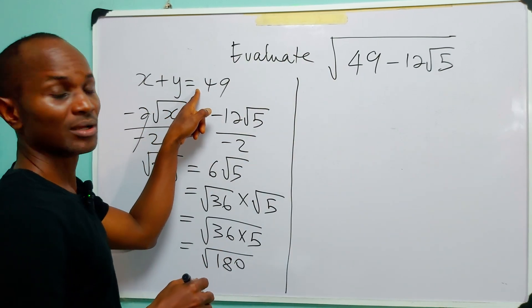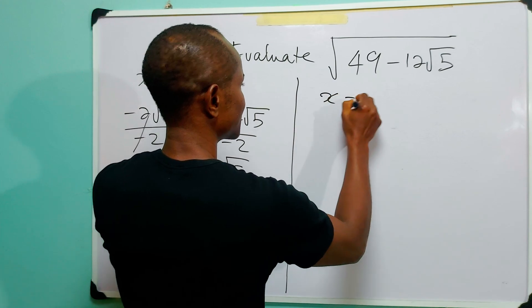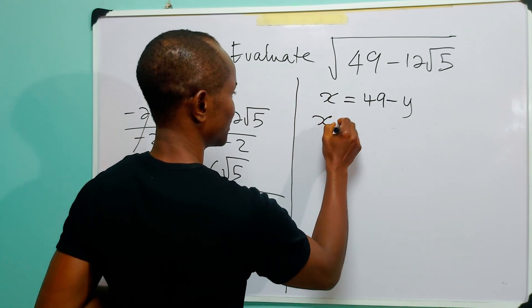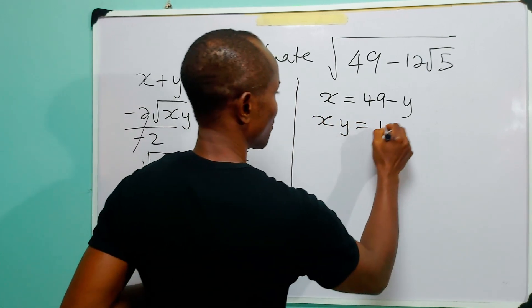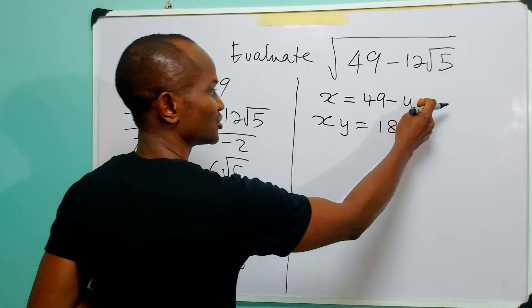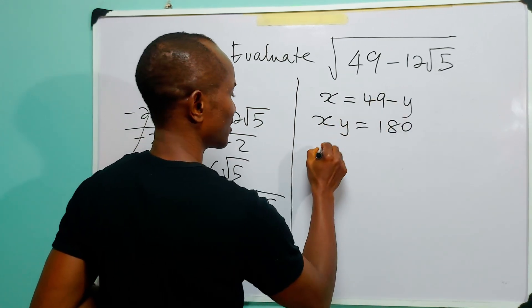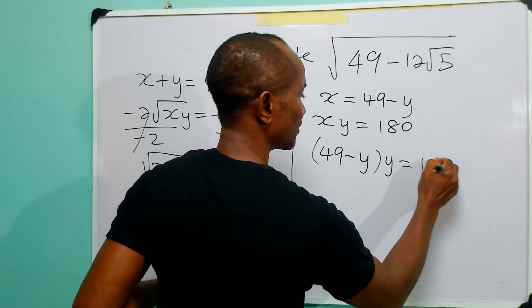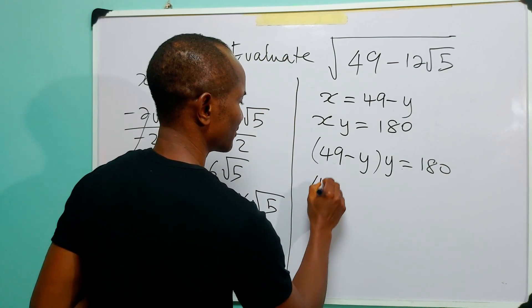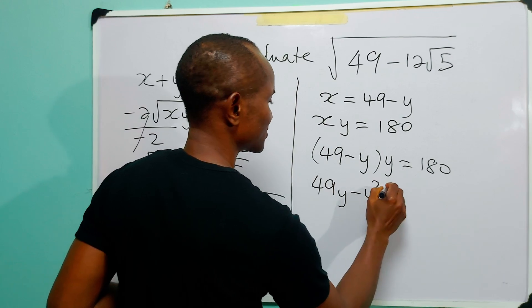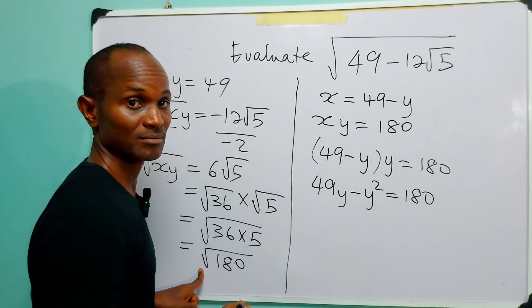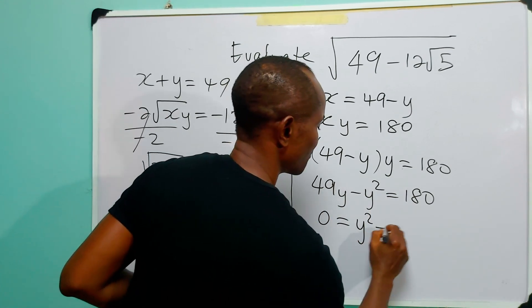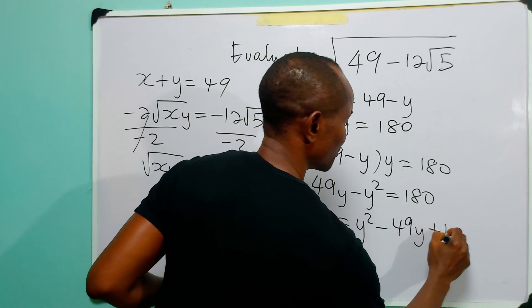So from the first equation, I can write that x equals 49 minus y. And from the second equation, xy equals 180. Substituting, I have that (49 minus y) multiplied by y equals 180. Opening this bracket, we have 49y minus y squared equals 180. Taking all terms to the right-hand side, we have 0 equals y squared minus 49y plus 180.